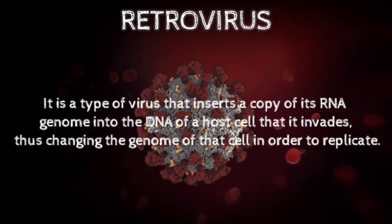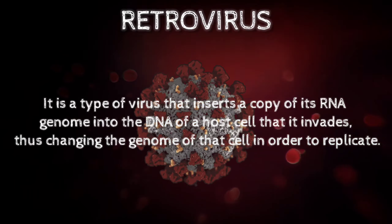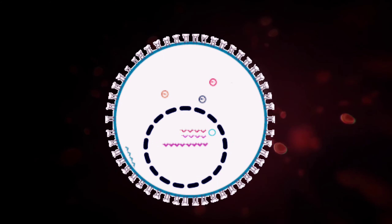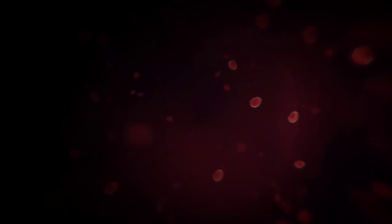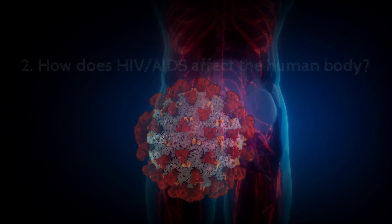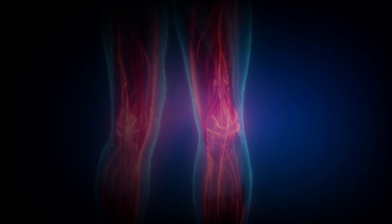Third, HIV is the first stage where the body's immune system gets infected, while AIDS is the latter and final stage of HIV. Furthermore, HIV is a retrovirus — a type of virus that inserts a copy of its RNA genome into the DNA of a host cell it invades, changing the genome of that cell in order to replicate. This is why HIV and AIDS are incurable. HIV is a rapidly evolving virus that constantly mutates during replication to create new variants, which is why a vaccine has still not been made.